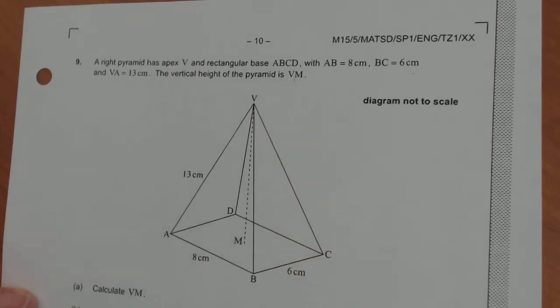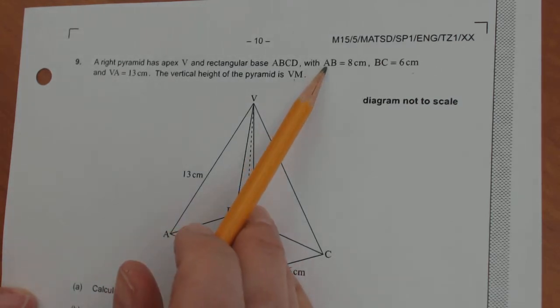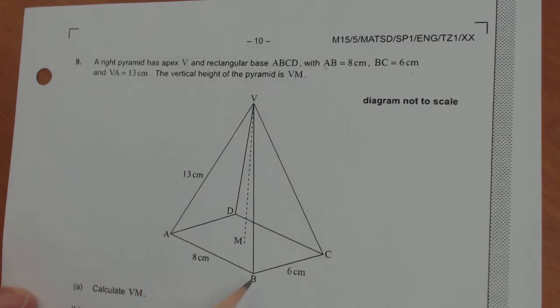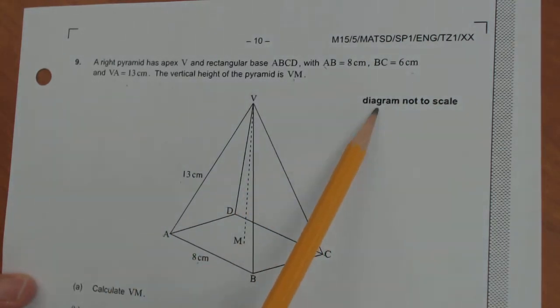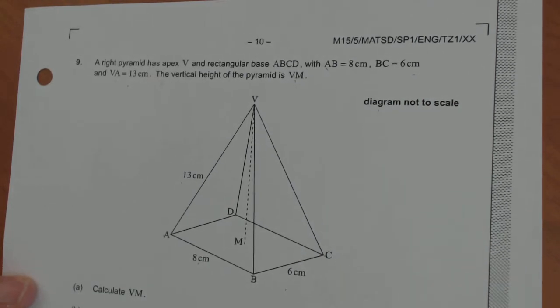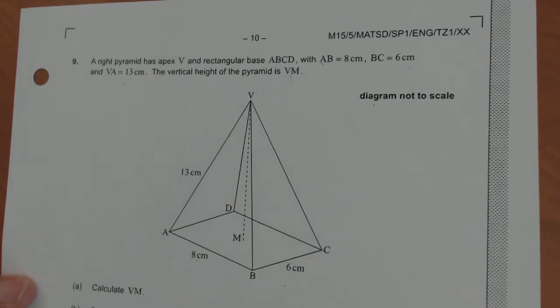So first let's see what information they have actually put into the picture. I like doing that before I even see what the questions are asking. So the distance between A and B is 8, between B and C is 6, and between V and A is 13. They put all the information in. Notice it's not drawn to scale, so we're definitely going to have to do some mathematics.